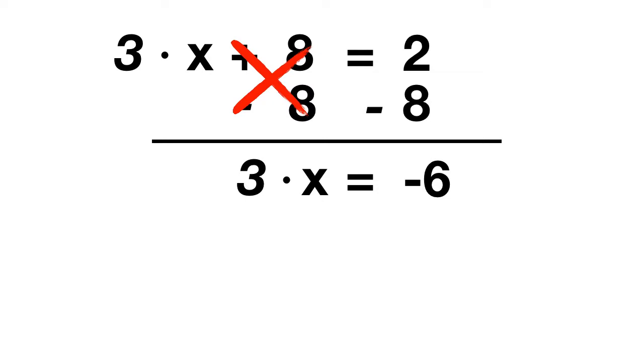Now all that's left is cancelling out the 3 times. We'll cancel multiplication by dividing by 3. 3 divided by 3 cancels out, so you're left with x. And on the other side of the equation, we'll take negative 6 and divide by 3.